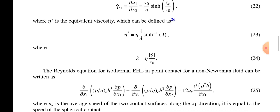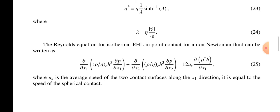These are the Reynolds equations for isothermal EHL in point contact. This is the derivative with respect to x₁ in bracket.